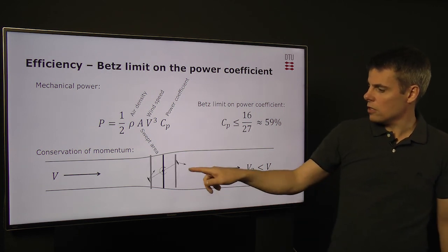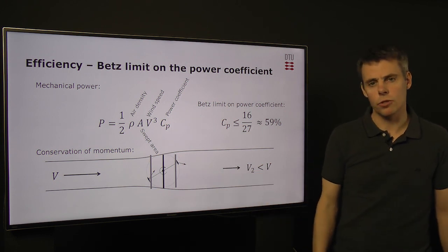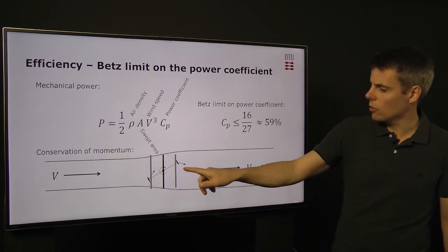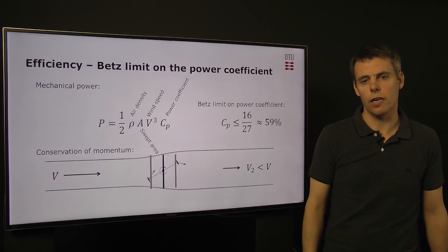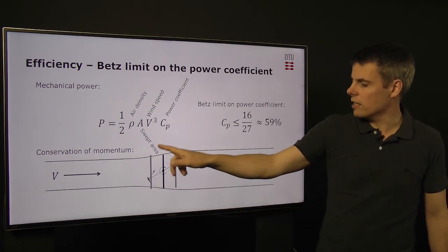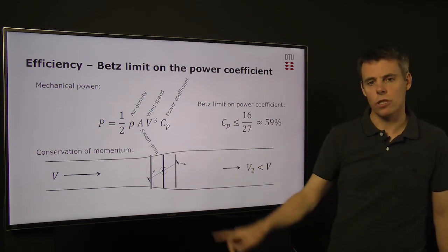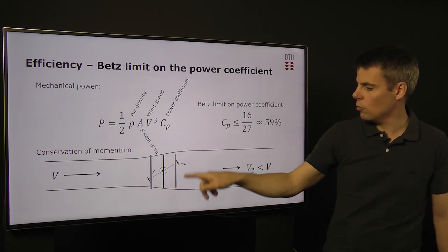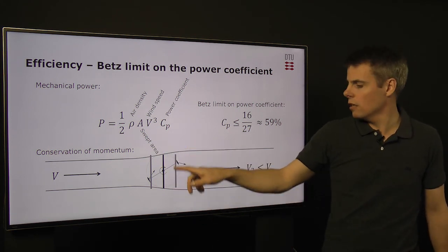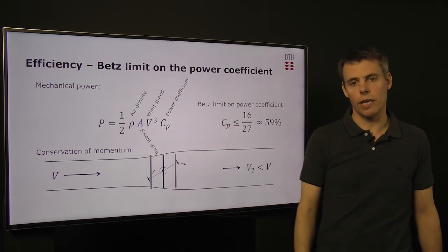You can of course discuss, if you look at the different concepts, what is the swept area. For example, if you look at a vertical axis turbine, you could say that it has two areas of which it extracts. One in the front and one when the blade is passing behind the other blades.